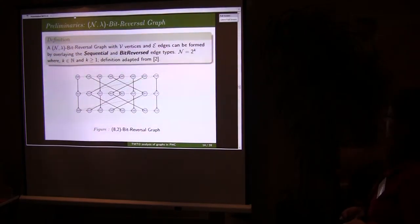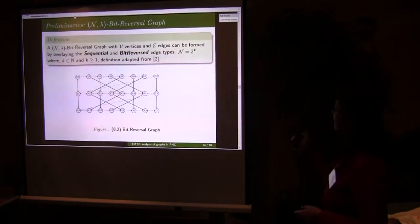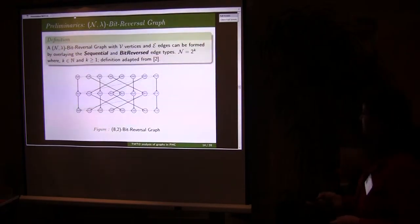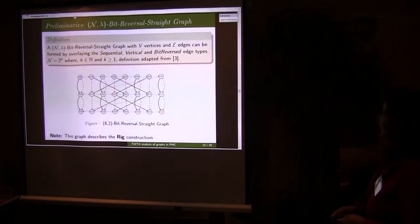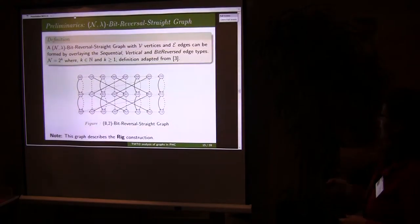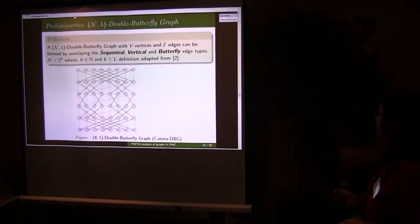Now this is bit reversal graph. It is the overlapping of sequential and bit reverse graph. And this is bit reversal straight graph. It has 3 dependencies: sequential, vertical and bit reversed. And our construction RIG follows this graph.